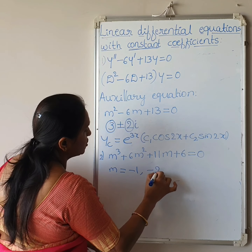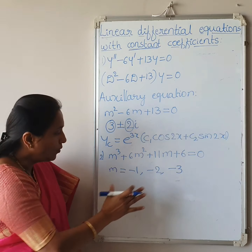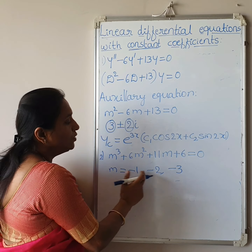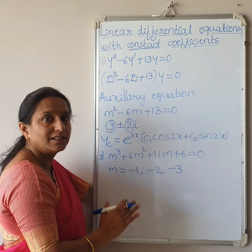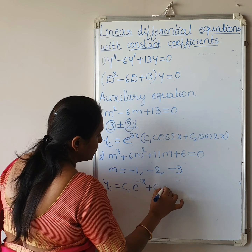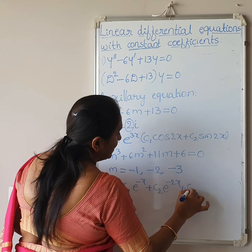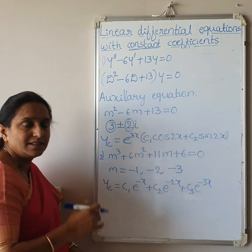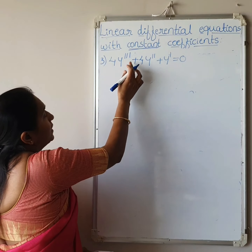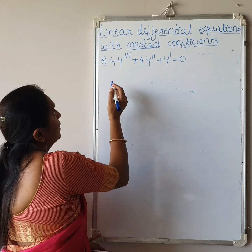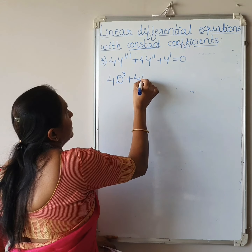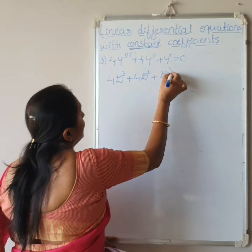Next example: m³ plus 6m² plus 11m plus 6 equals 0. Using a calculator, the roots are m equals -1, -2, and -3. These are real and distinct. It is a cubic equation so we get 3 roots and 3 constants. Therefore yc equals c1·e^(-x) plus c2·e^(-2x) plus c3·e^(-3x).